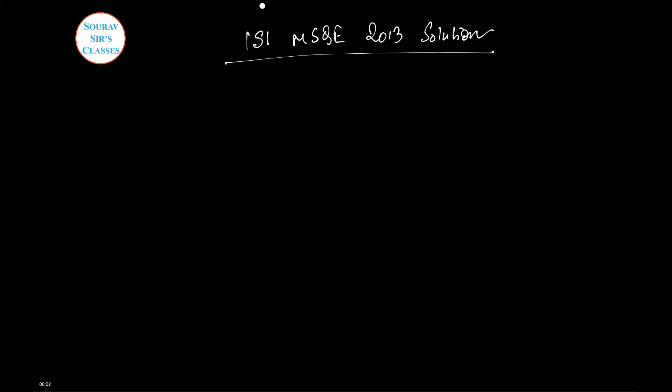Hello students, welcome to a new video from Offshore Research Classes. In this video I will be solving ISI MSQE 2013. I will write the question and solve it — you can pause it, review it, and any query you can ask me directly from my website. Links are given in the description below. Let's start with the first part: if x equals a given expression where x is not equal to 1, find f of f of 1 by x.